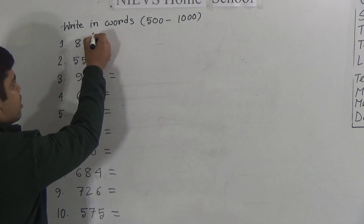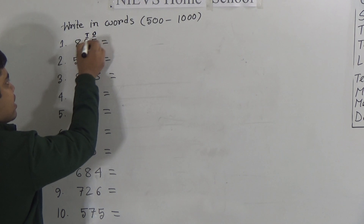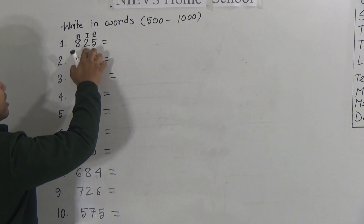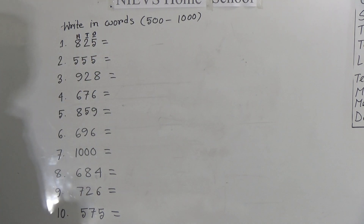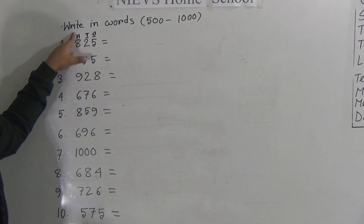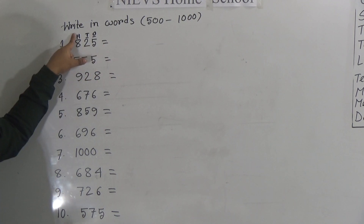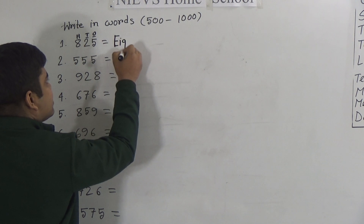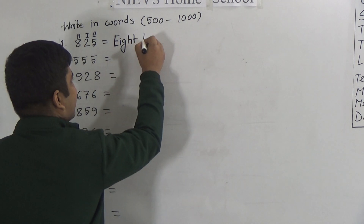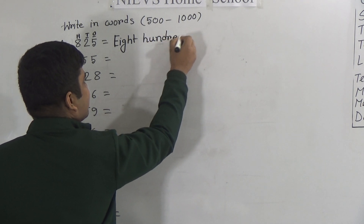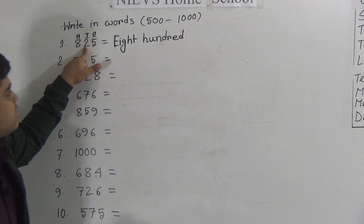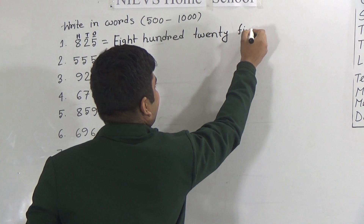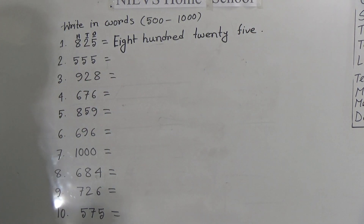So, here number 1: 8, 2, 5. How can we write any number in words? First of all, 5 is in the 1's place, 2 is in the 10's place, and 8 is in the 100's place. So we read this number as 825. The spelling of 8: E-I-G-H-T. And the spelling of hundred: H-U-N-D-R-E-D. Eight hundred. Then 20: T-W-E-N-T-Y. And 5: F-I-V-E. First one is done.